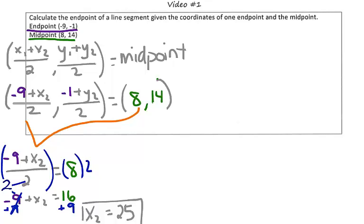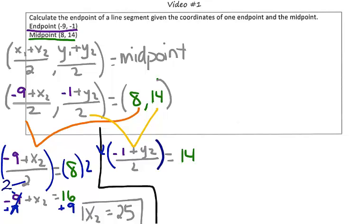We're going to use the same process now for our y value. So taking a look, let's go ahead and set up an equation with the values that we know for y. We have negative 1 plus some y value divided by 2 is equal to 14. We're going to use inverse operations just like before. Multiply both sides by 2.